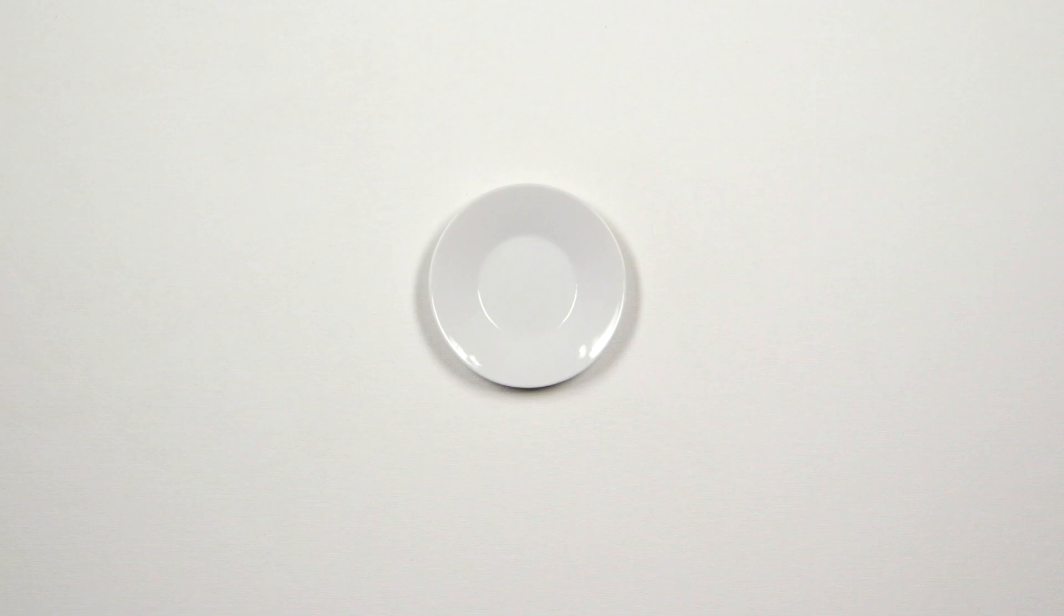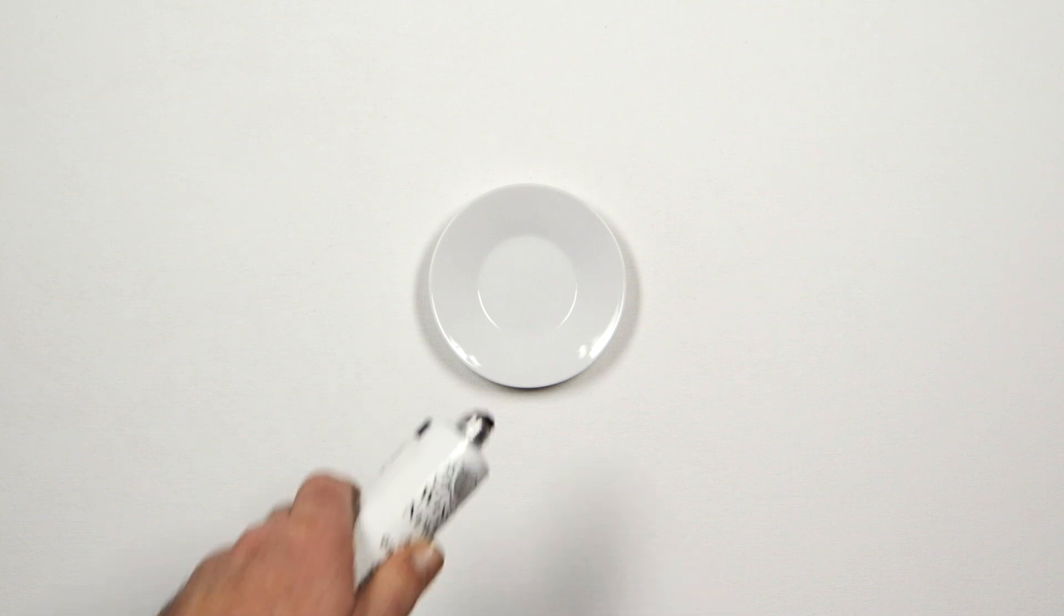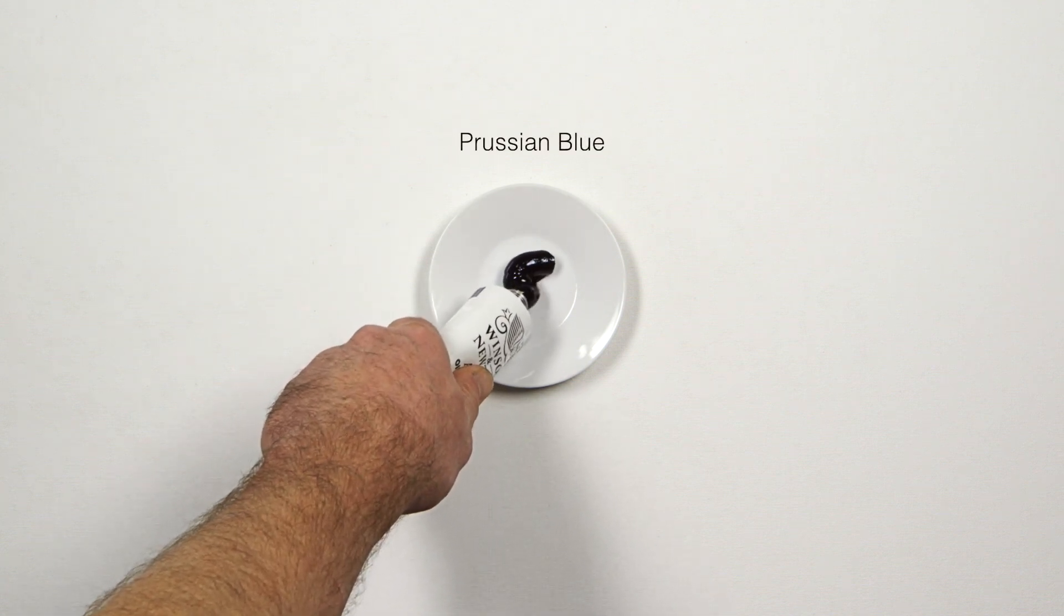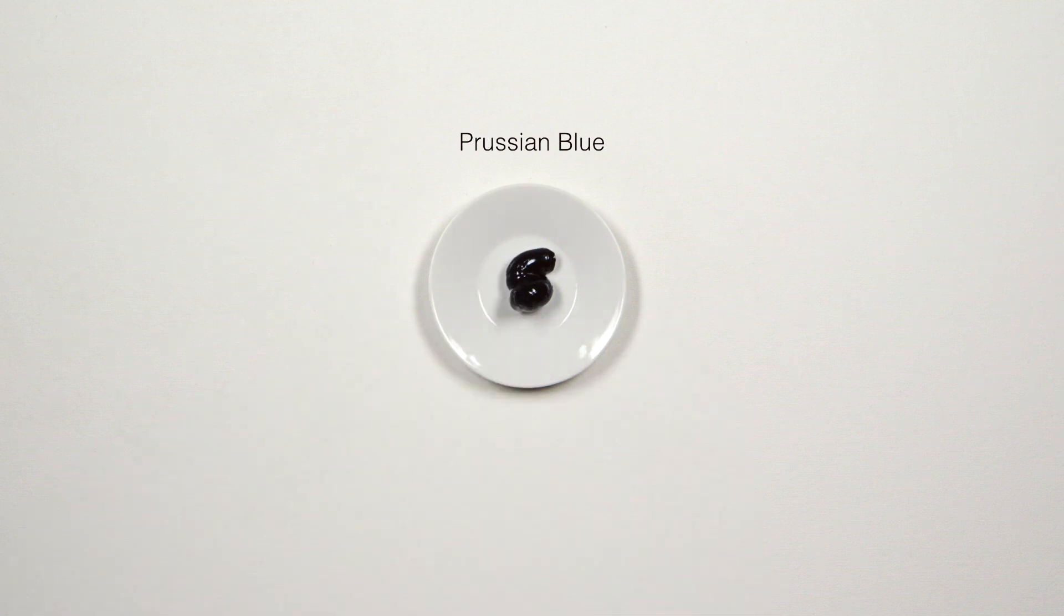Prussian blue is one of the first synthetic organic pigments, accidentally discovered by a scientist named Heinrich Diesbach while he was trying to develop a synthetic version of carmine red.